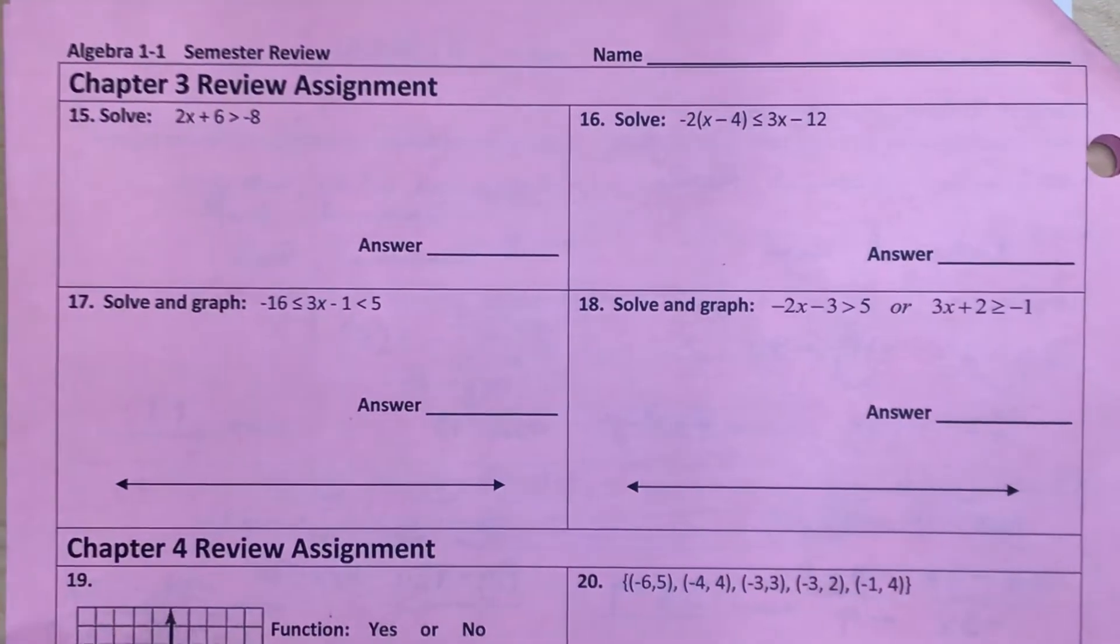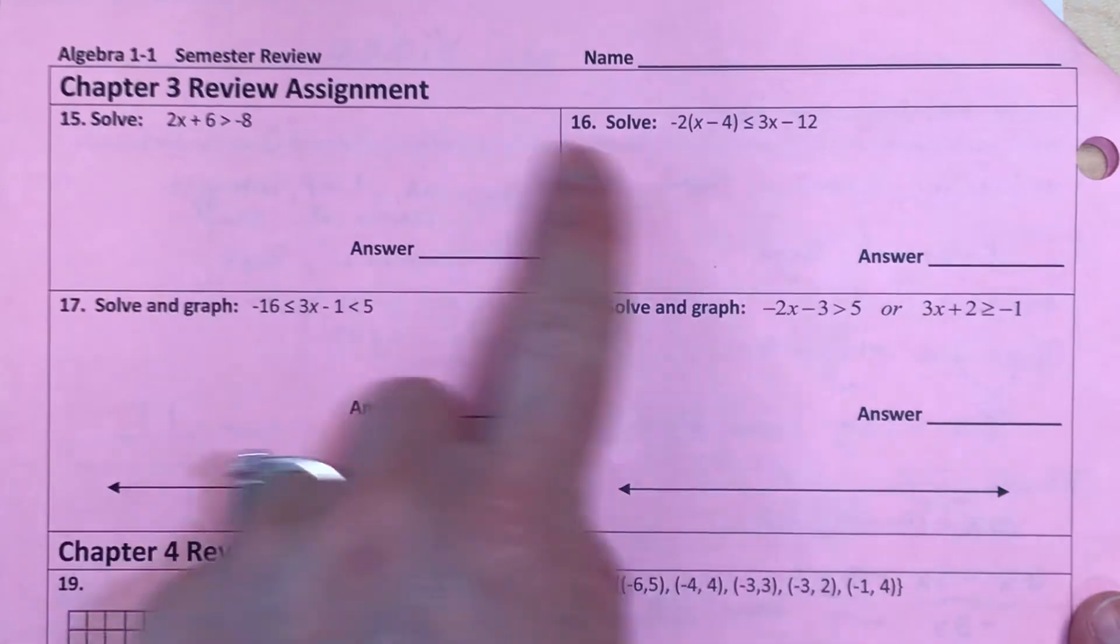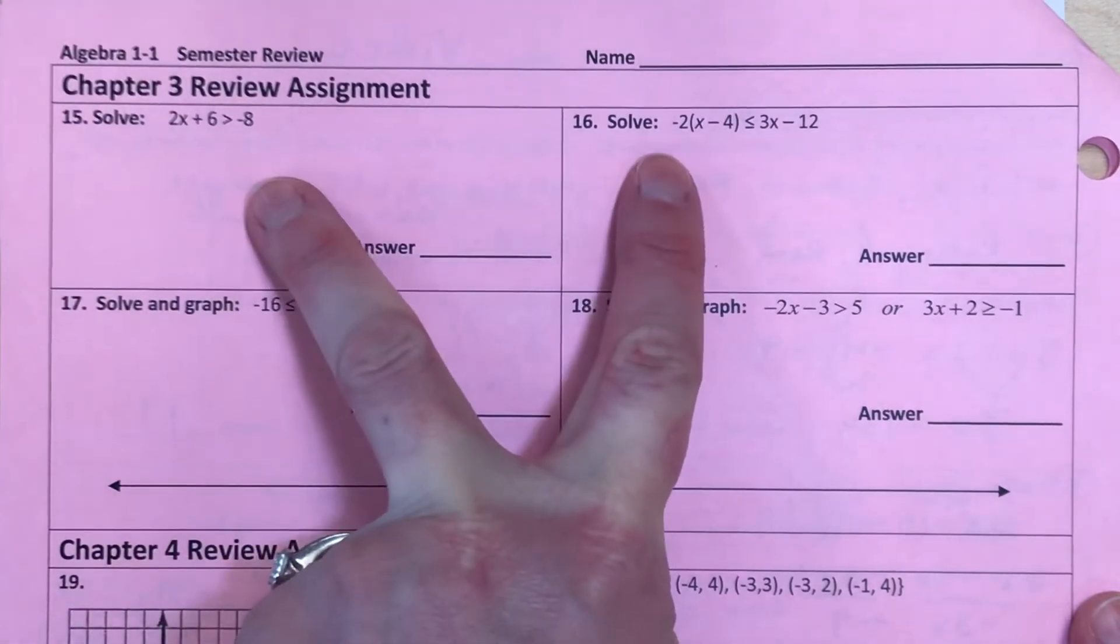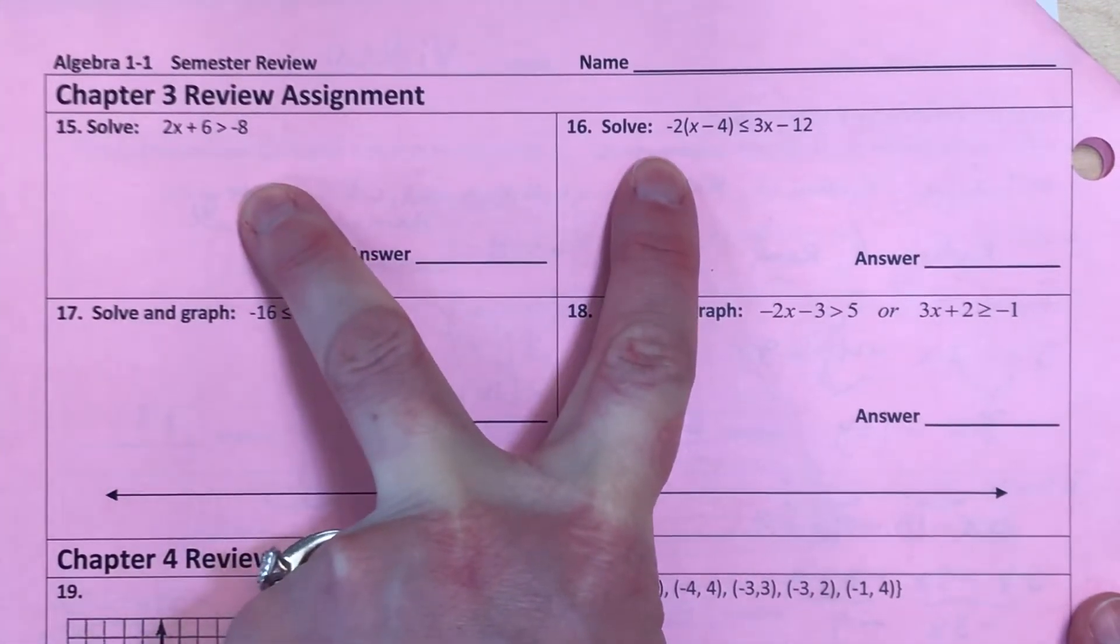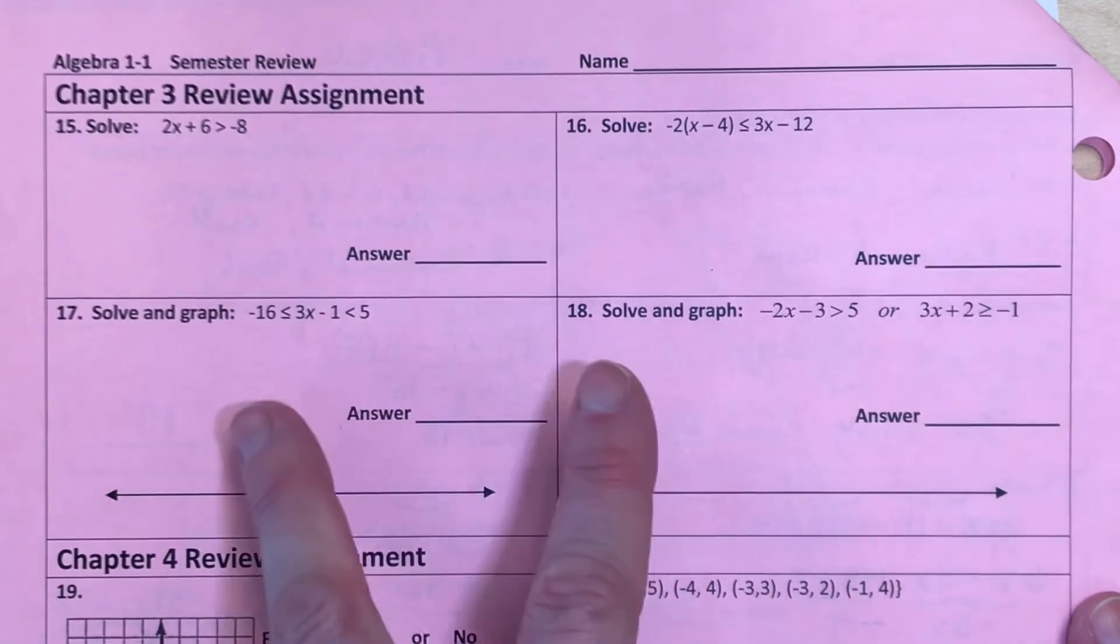So in chapter 3, we were learning how to solve when you have inequalities, and in this case, you're going to have more than one solution, because if you say x is greater than 2 for an answer, that means there's a lot of numbers greater than 2. And so I want to show you not only how to solve, but how to graph each of these. So the first two problems are singular inequalities, and then the second two are called compound inequalities, because two inequalities work together.